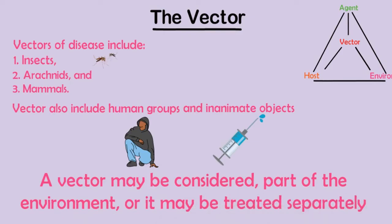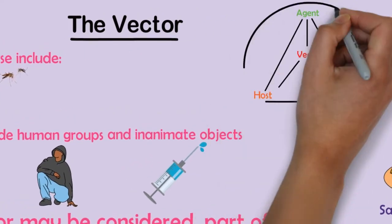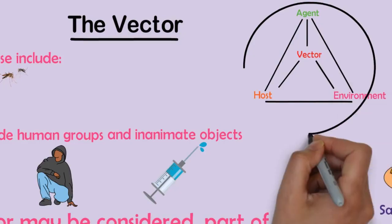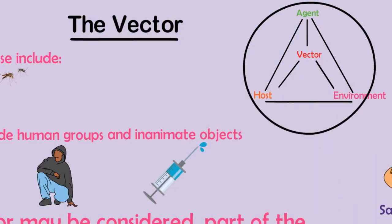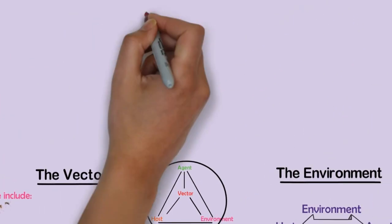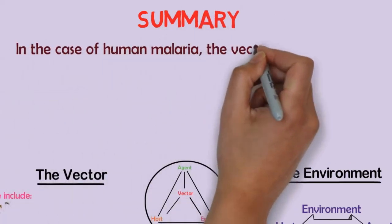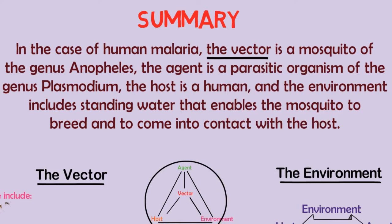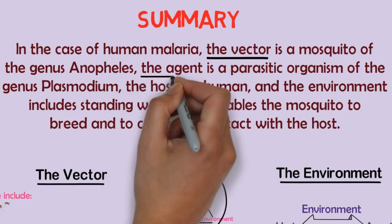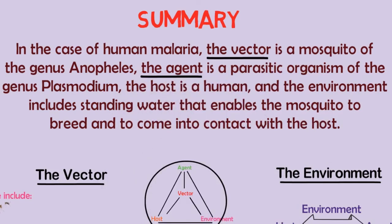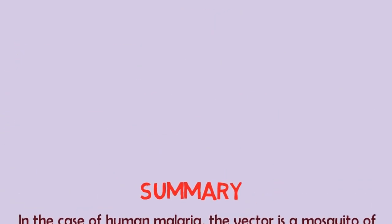To be an effective transmitter of disease, the vector must have a specific relationship to the agent, the environment, and the host. In summary, in the case of human malaria, the vector is a mosquito of the genus Anopheles, the agent is a parasitic organism of the genus Plasmodium, the host is a human, and the environment includes standing water that enables the mosquito to breed and to come into contact with the host.